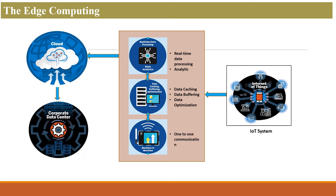Small network communication is one-to-one communication. If you have the storage capacity, processing capacity, sensor technology, and IoT devices, through the data you can see data caching, data buffering, and data optimization.